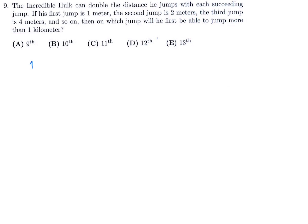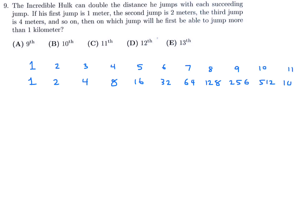On the first jump it's 1 meter, second 2, third 4, then 8, 16, 32, 64, 128, the 9th jump is 256, 10th jump is 512, and the 11th jump is 1024 meters. 1024 meters is the first one over a kilometer, and that happens on the 11th jump. Number 9, the answer is C.